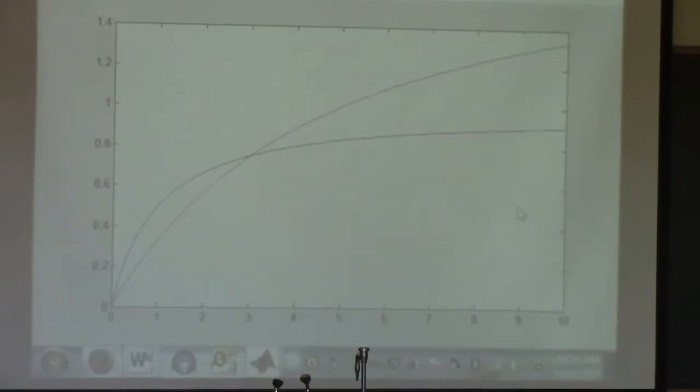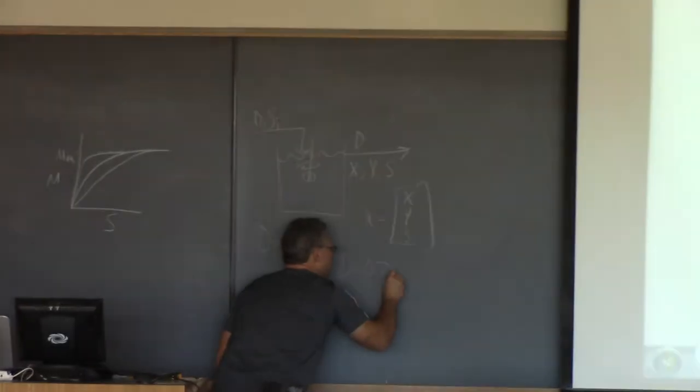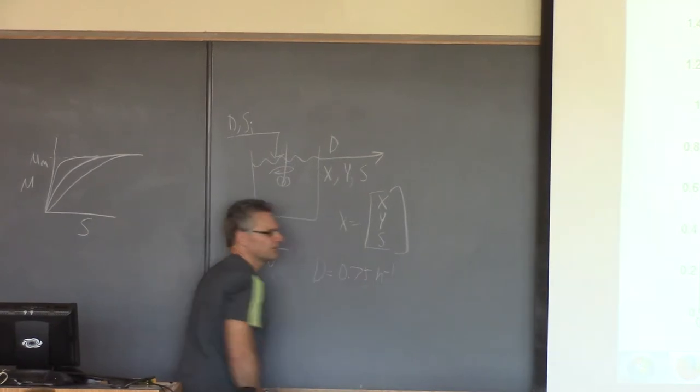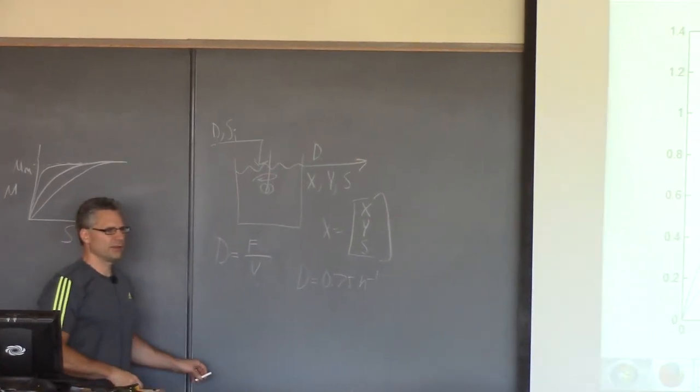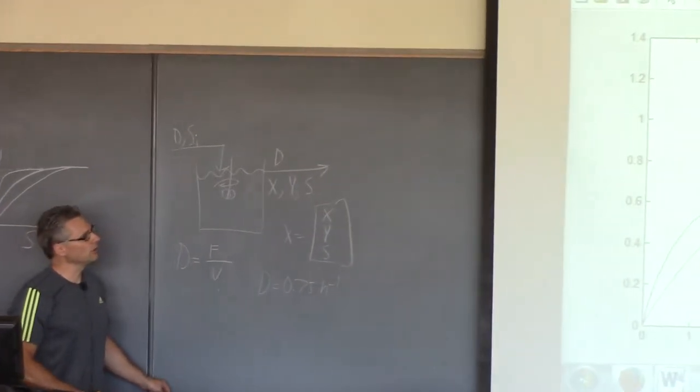The number here is d equals 7.5 units that are diverse hours. So if you have a deletion rate of 0.75, the two have the same growth rate.